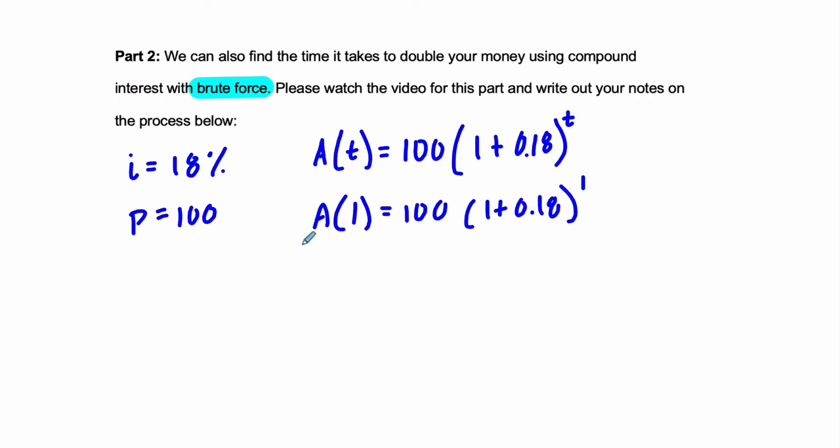Now before we go any further, let's use our rule of 72 to predict what we're going to find. 72 divided by 18 is 4. So we should find that it's after 4 years. Or it takes 4 years of this to work out.